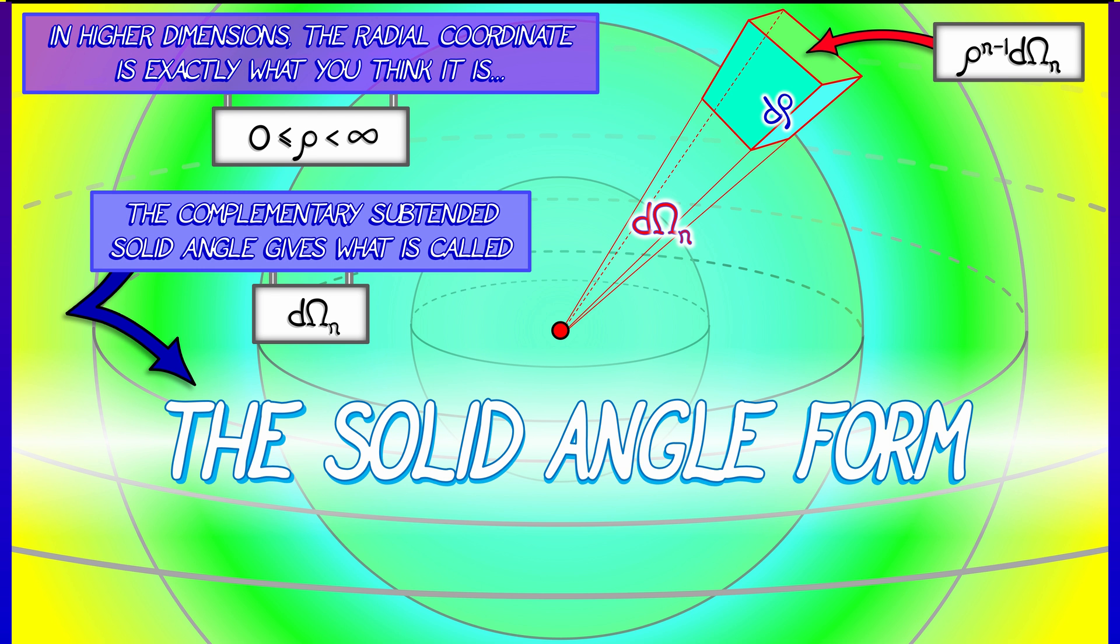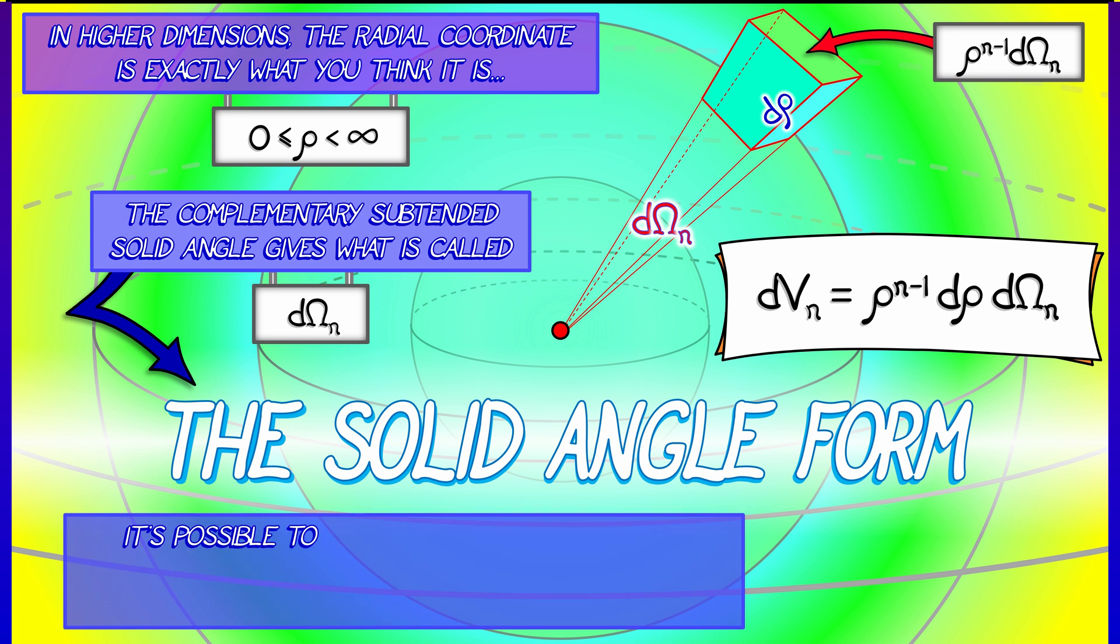When you multiply that by d rho, then that gives you the volume form in spherical coordinates in n-dimensional space. dV_n is rho to the n-1 d rho d omega n.